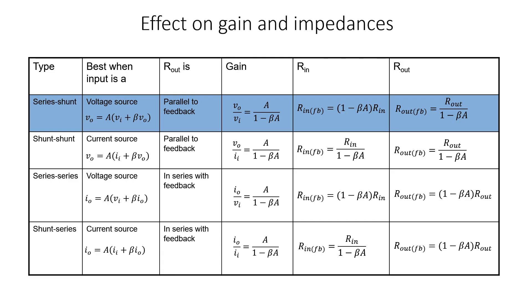We've essentially confirmed line one on this chart, which summarizes the effect of negative feedback on gain, input impedance, and output impedance for each of the four feedback types. The types are called series-shunt, shunt-shunt, series-series, and shunt-series. At the input side, if it's series, we're talking about a voltage source; if it's shunt, we're talking about a current source. The opposite is true on the output side.